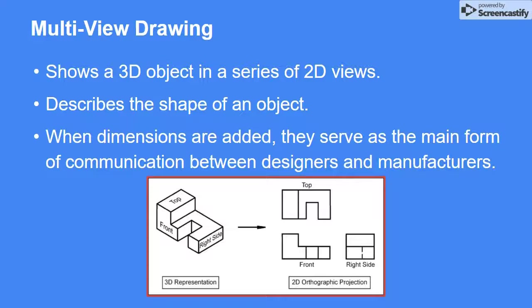By looking at the object one 2D side at a time, we can easily add dimensions and communicate the specifics of the part or object to the person who's going to build it. For this reason, orthographic drawings are usually the preferred type of drawing when communicating with the manufacturer.